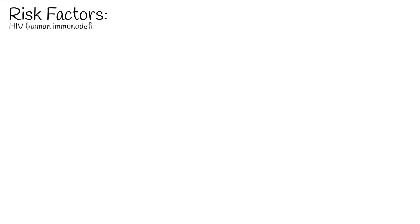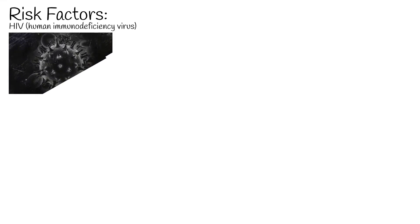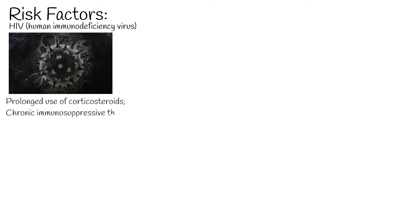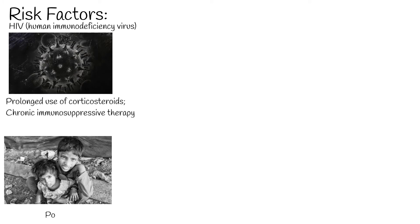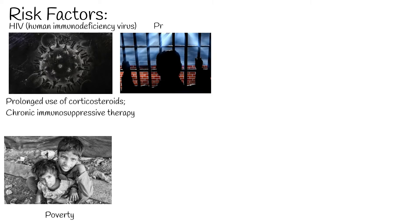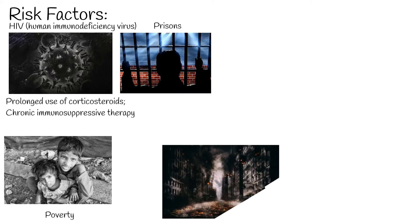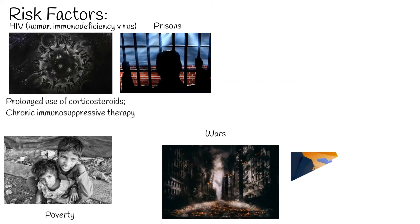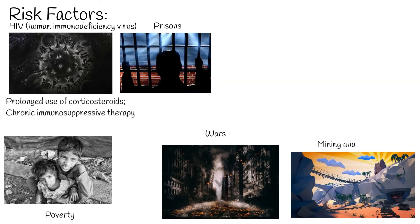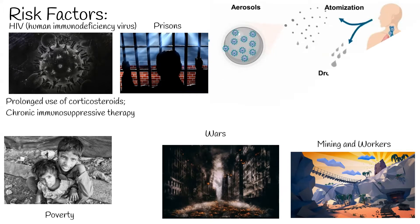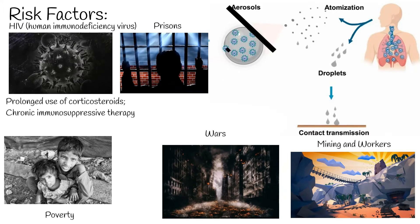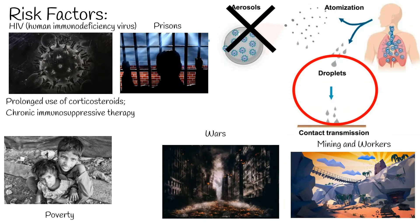Risk factors: Immunocompromised conditions can increase the risk of tuberculosis, such as HIV, prolonged use of corticosteroids, and chronic immunosuppressive therapy. Socioeconomic factors including poverty, malnutrition, prisons, and wars also contribute. Occupational exposure in mining and construction workers, as well as pneumoconiosis, are additional risk factors. The principal mode of spread is through the inhalation of infected aerosolized droplets.